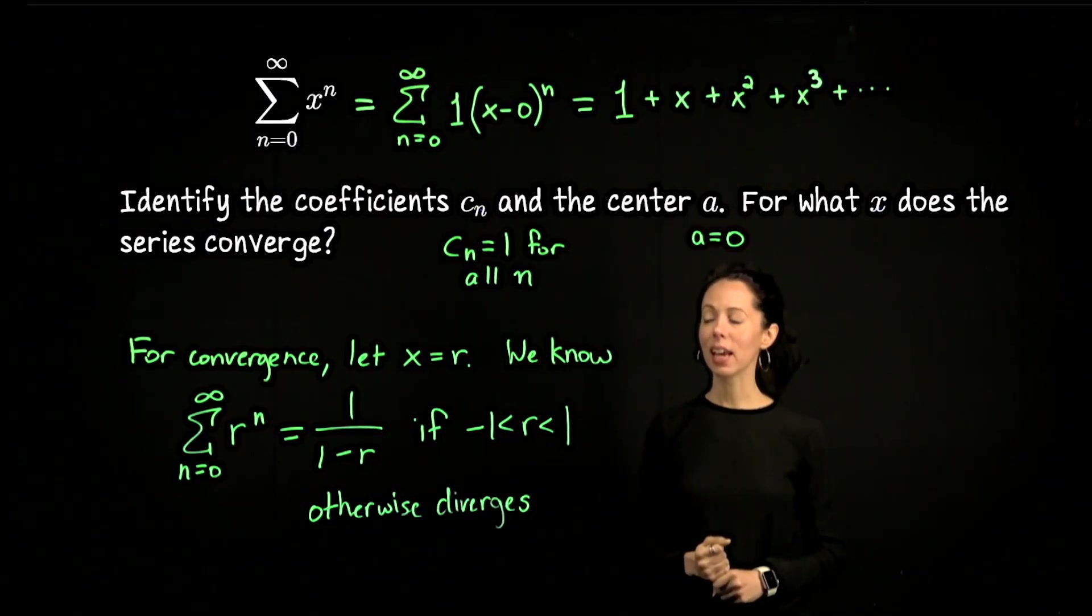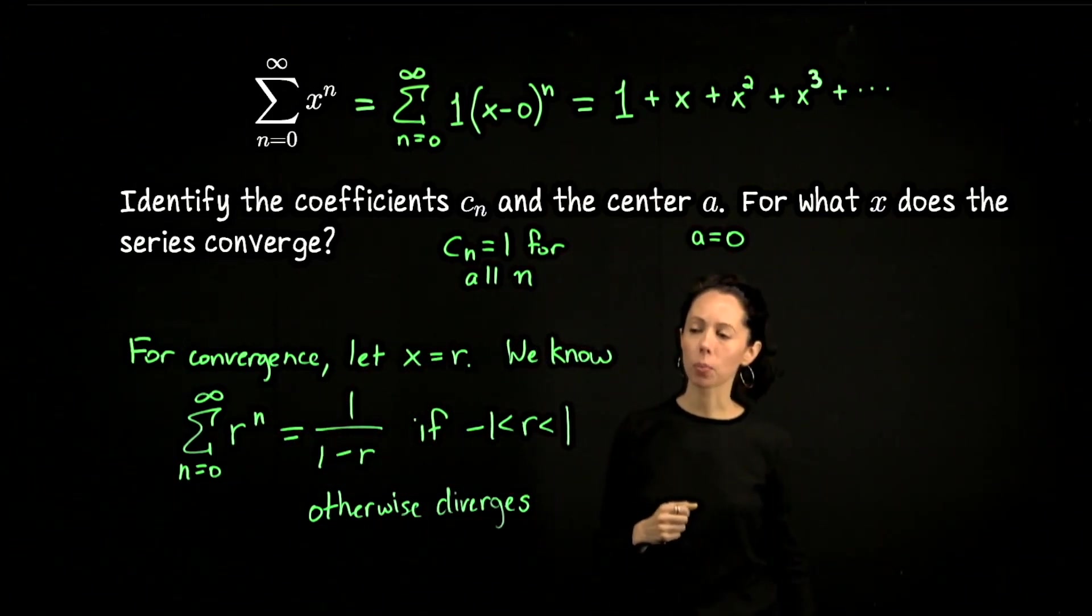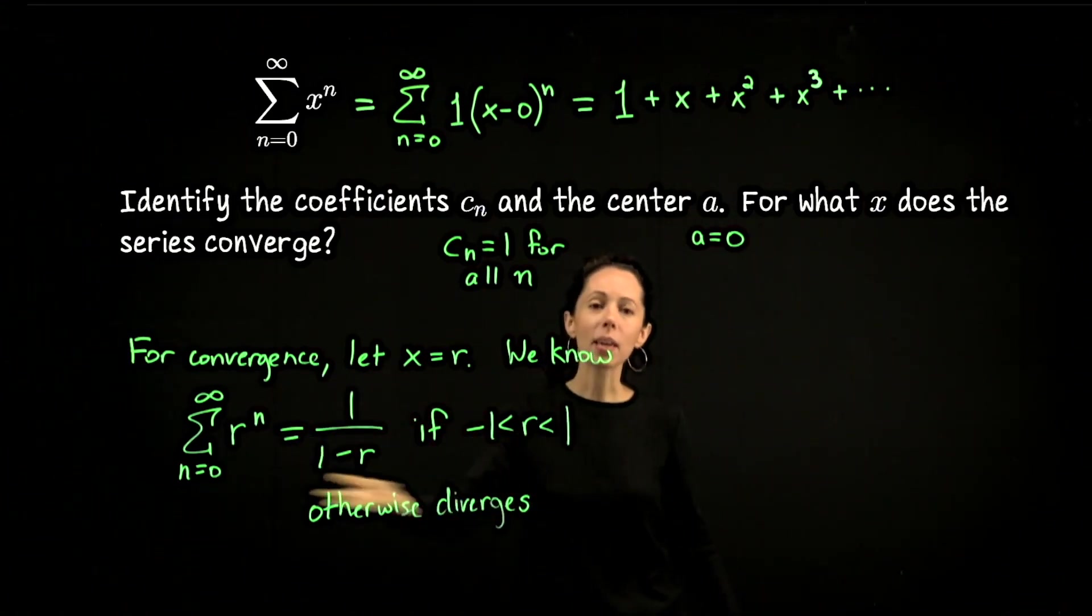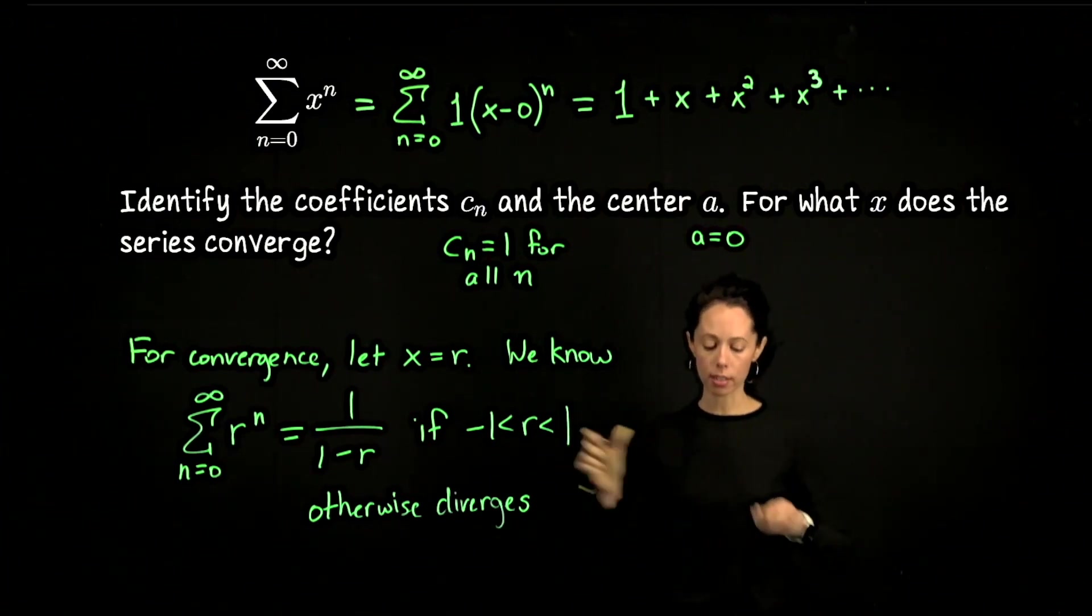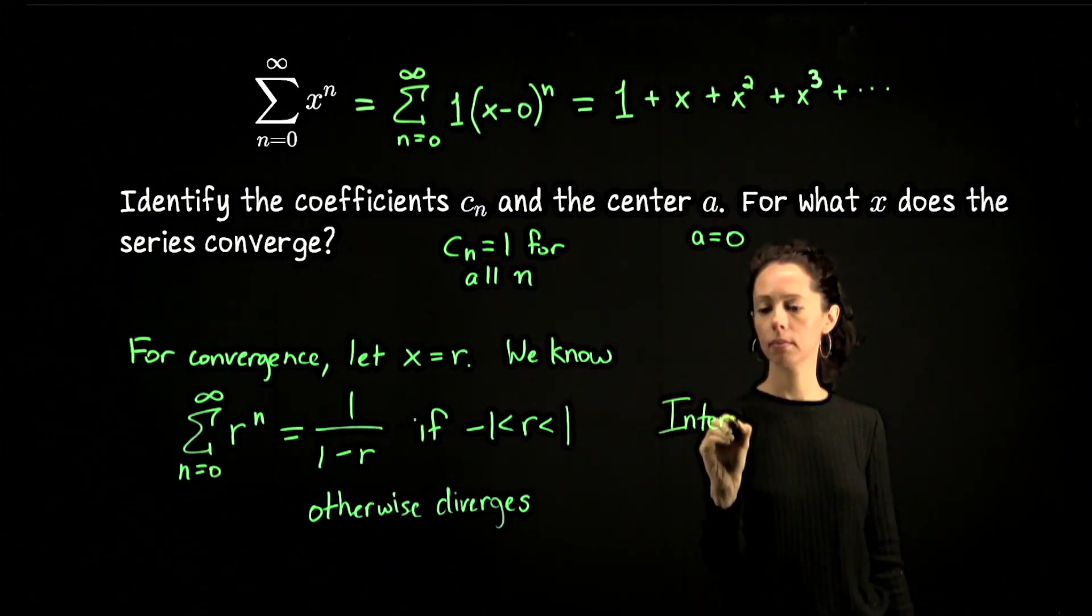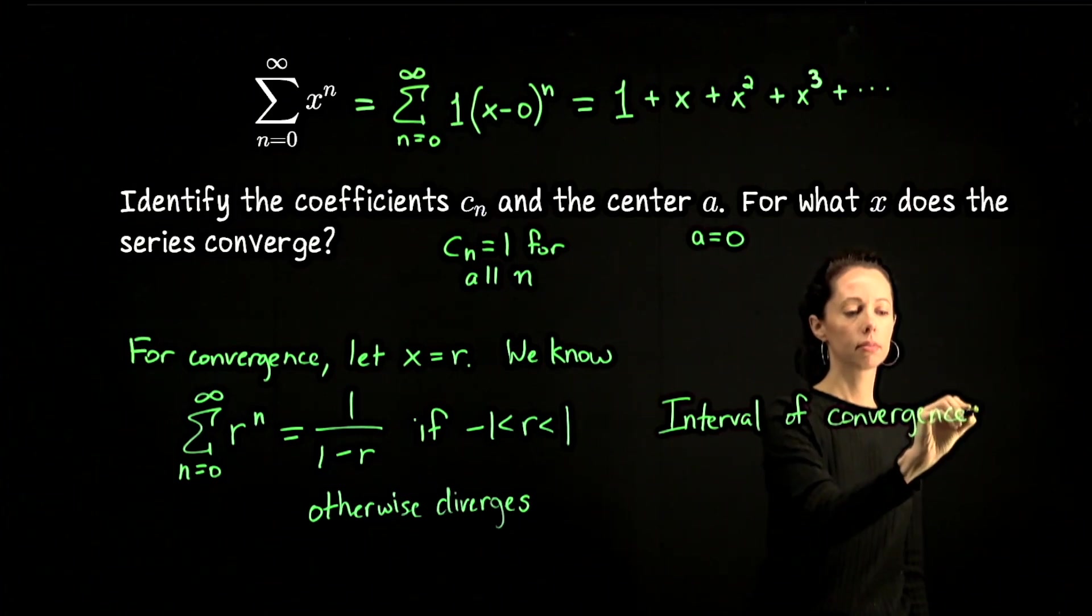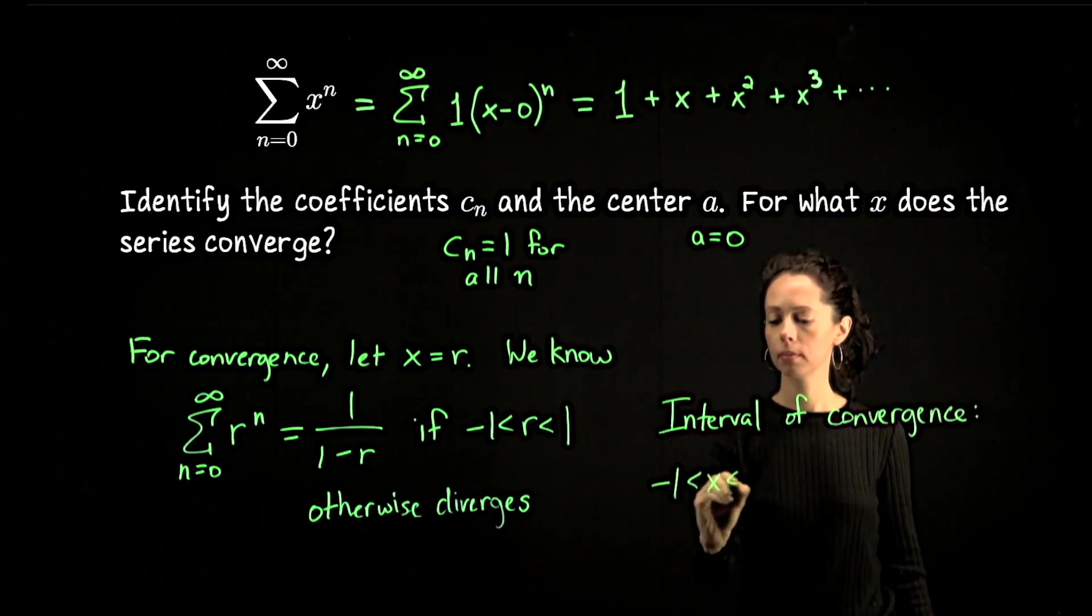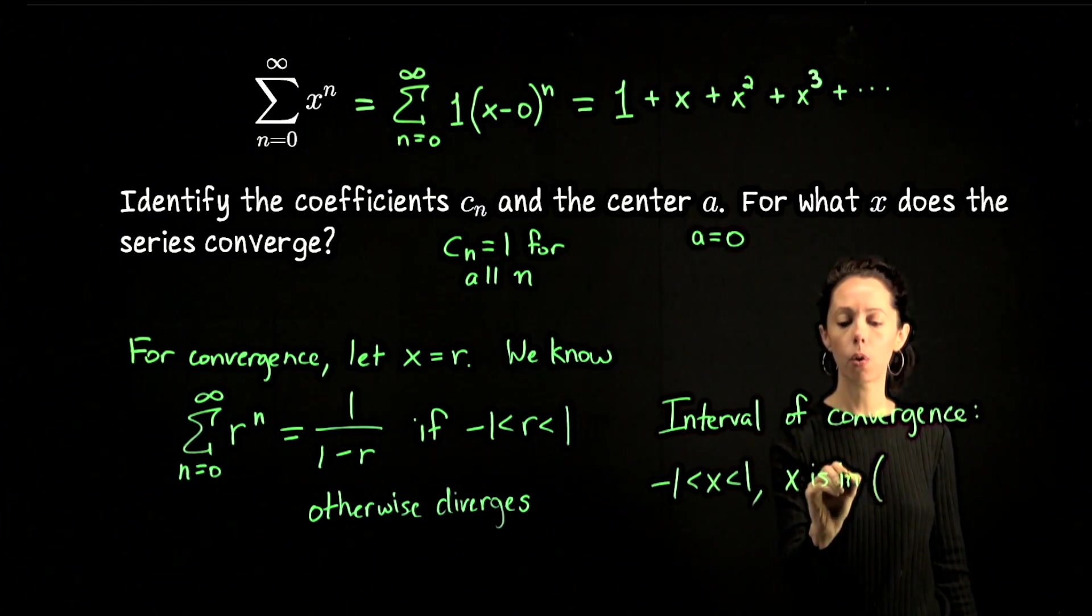So now we have stated when this series converges in terms of r, but all I did was just change letters to make it look more recognizable. Going back to the way our series was presented to us originally, we have the same conclusion. This series converges whenever x is between negative 1 and 1, otherwise it diverges. We can call this an interval of convergence.